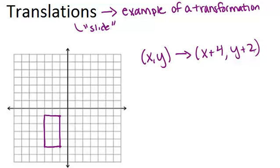So what that means is that all the x coordinates increase by 4 and all the y coordinates increase by 2. Another way of thinking about that visually is we're going to shift it 4 units to the right and 2 units up.